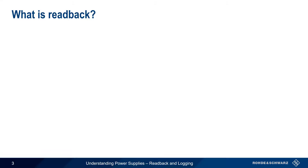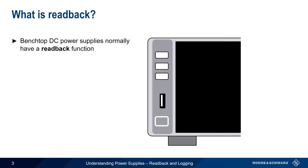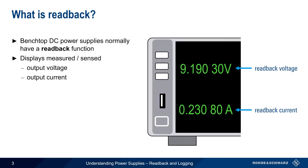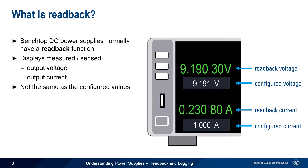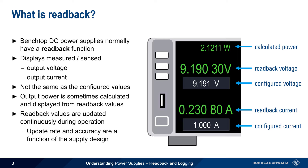Let's start by defining what we mean by readback. Modern benchtop DC power supplies normally have a readback function that displays the measured or sensed output of the supply. Most often, both the output voltage and output current are displayed. Note that these measured readback values are not necessarily the same as the user-configured values. Some supplies will also use the readback values of voltage and current to calculate and display power. Readback values are updated continuously during operation, and the rate at which these values are updated, and the accuracy of the readback values, are a function of the power supply design.